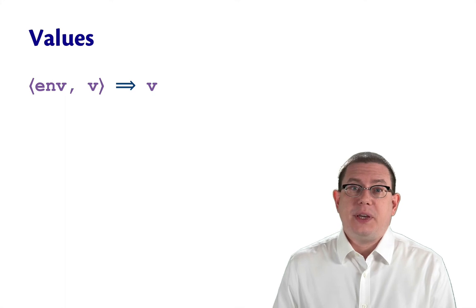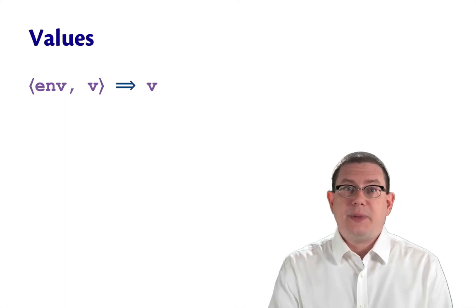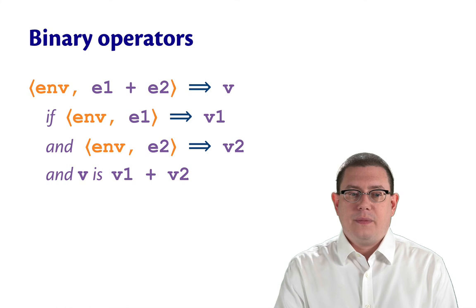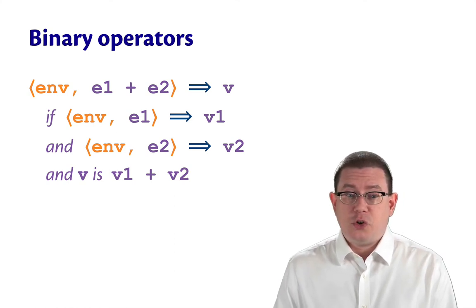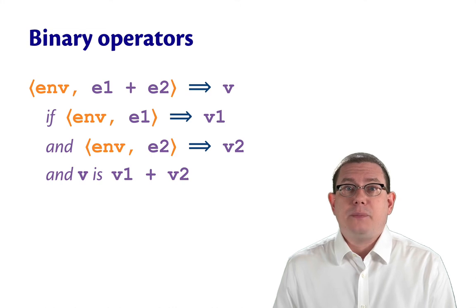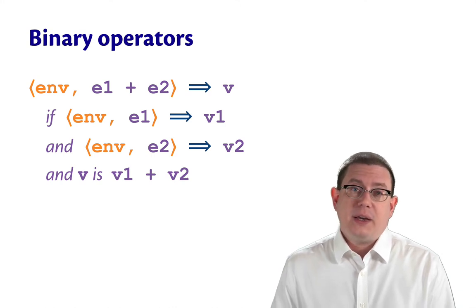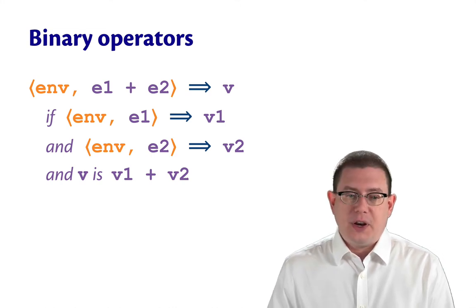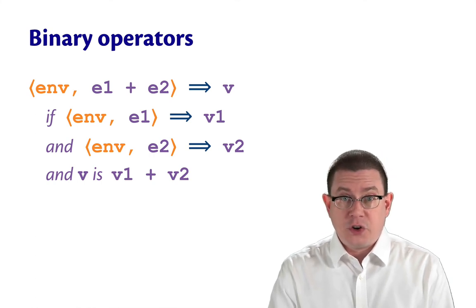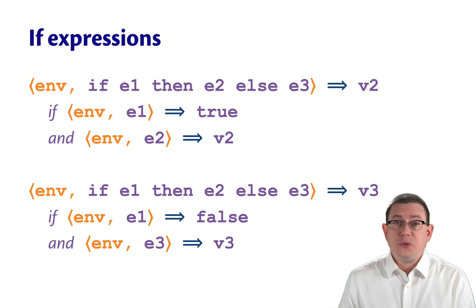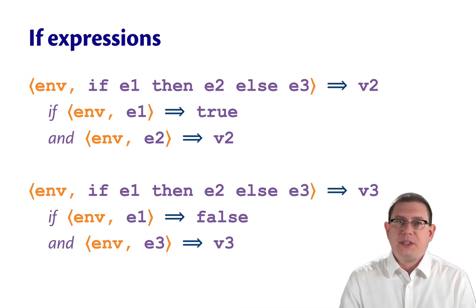Values simply evaluate to themselves, same as they did with substitution model. Binary operators work almost identically to the substitution model. We just have to add the machine configuration part around it, but there's no interesting use of it here. We just keep pushing the same environment down into evaluation of the sub-expressions. And the same is true for if expressions. We're really just pushing that dynamic environment down through the semantics.